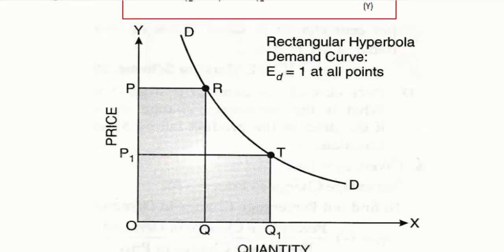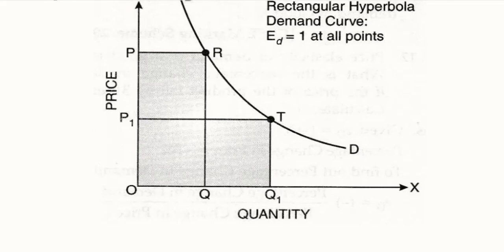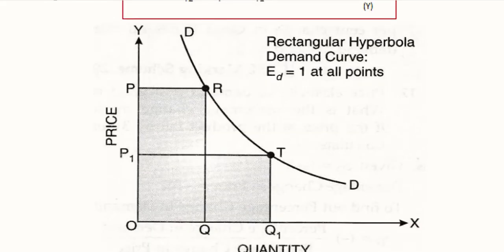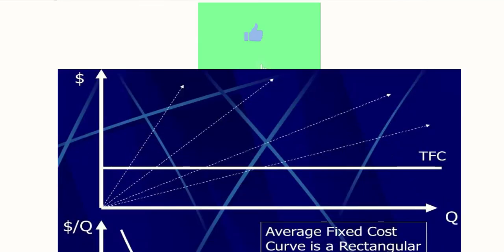Another economic example is the demand curve. In its more realistic form, the demand curve is a rectangular hyperbola generating asymptotes to both the x and y axes, with price level on the y-axis and quantity demanded on the x-axis. A key feature of such a rectangular hyperbolic demand curve is that the price elasticity of demand equals unity at all points.